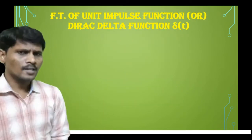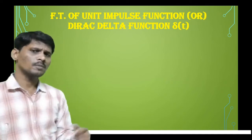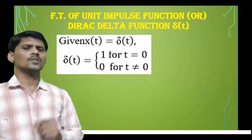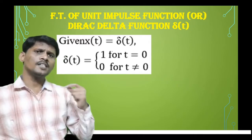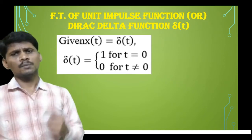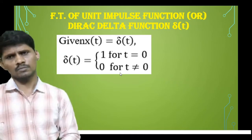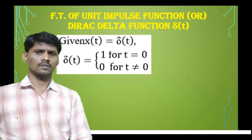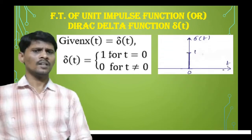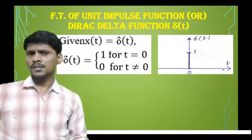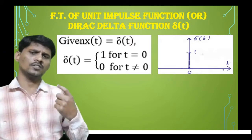First, we determine the Fourier transform of the unit impulse function, also called the Dirac delta function. The mathematical definition: δ(t) = 1, which exists only at t = 0, and δ(t) = 0 for remaining values of t. The given signal is x(t) = δ(t). Graphically, the impulse function exists only at t = 0; at remaining values of t, it does not exist, meaning it is 0 on the x-axis.